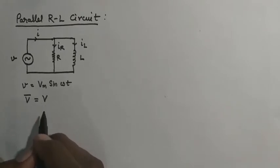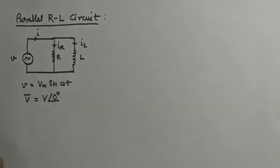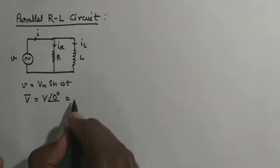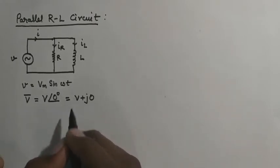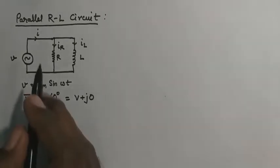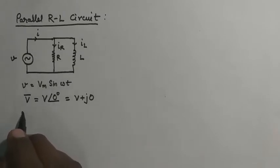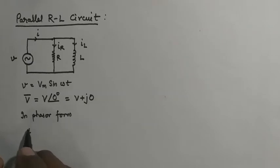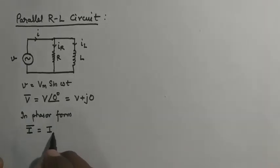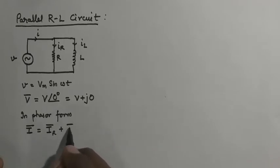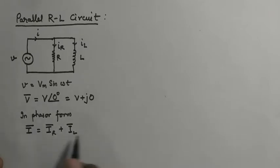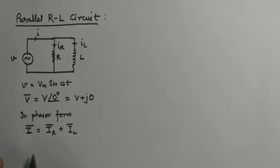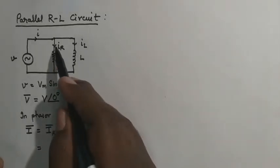So if V is given as Vm sin(ωt), then the reference phasor V can be written as its magnitude at phase angle zero, which in rectangular form is V + j0, containing only the real part. Using this we can find the rest of the quantities. In phasor form, the total circuit current phasor I will be equal to the sum of phasor IR and phasor IL — this is the parallel circuit condition.